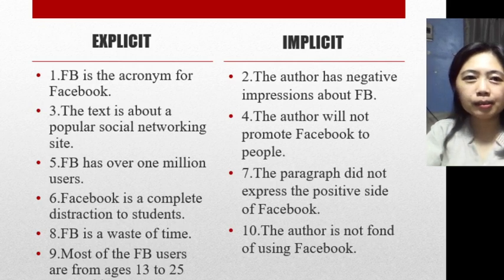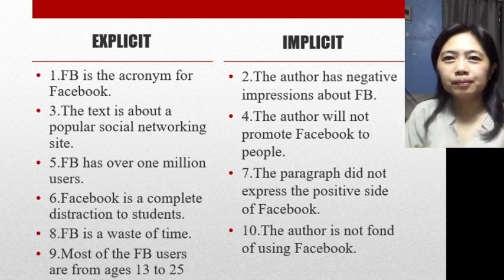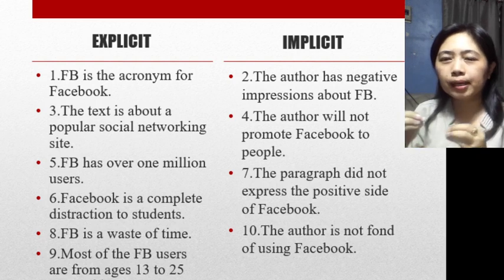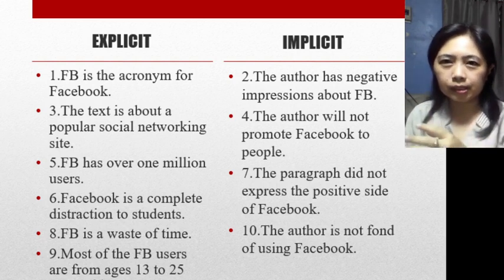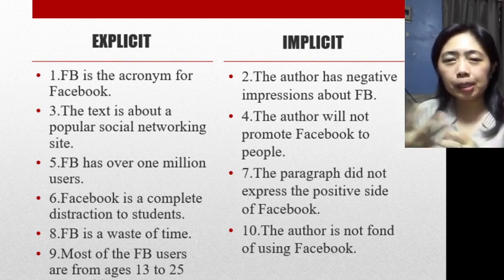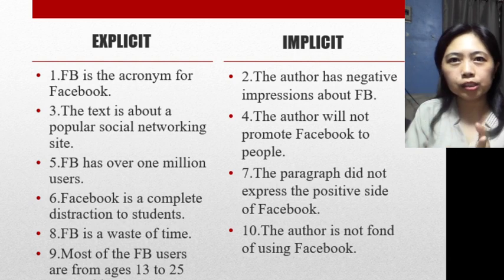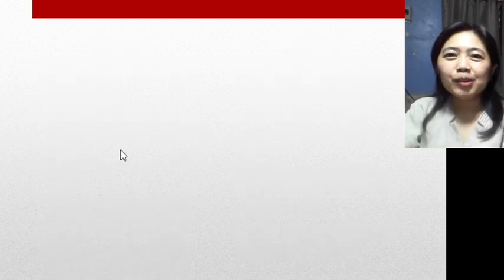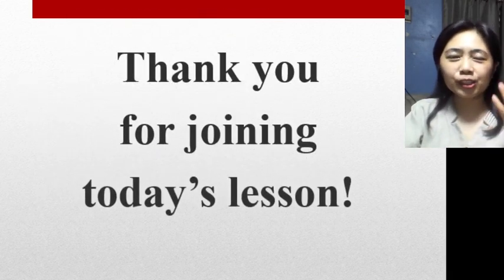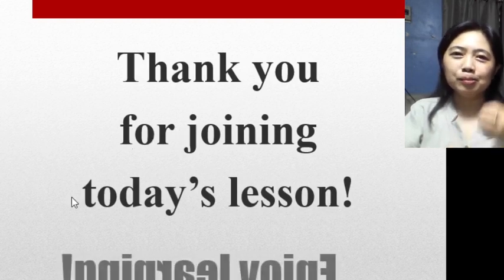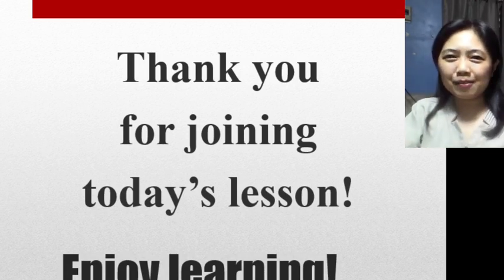I hope that the difference between explicit and implicit information is now clear. At least now you know how to determine the type of information — especially when identifying types of claims. A claim of fact is something that can be proven true or false, and a claim of value is based on your judgment. Thank you so much for joining today's lesson. I hope you learned a lot. Enjoy learning and see you on my next video lesson. That will be all for today. Keep safe, everyone. Goodbye for now.